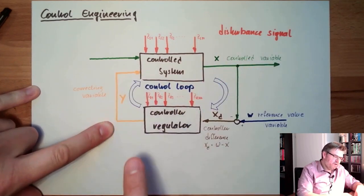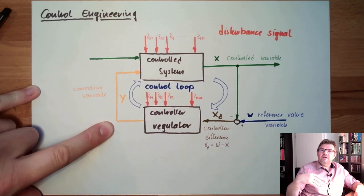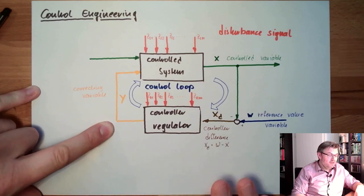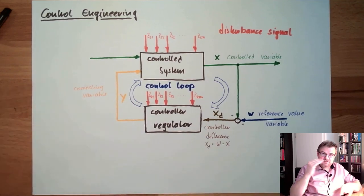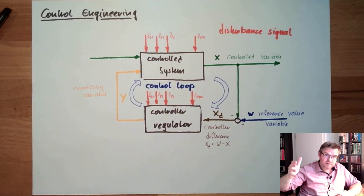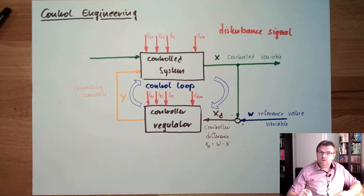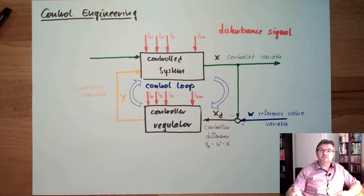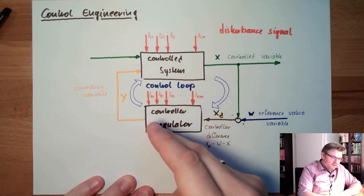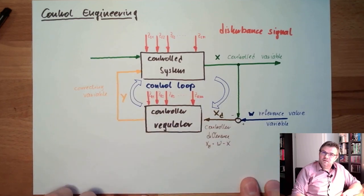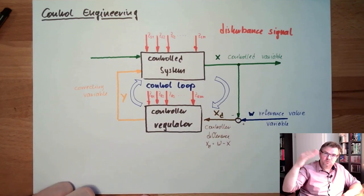However, here the correcting variable does not need to be continuous. If it can have any value between a minimum and a maximum, then it's a continuous controller. If it can only have discrete values — the most simple example is turn on or turn off — if the temperature is too low, turn on the heater; if too high, turn off the heater. Then it's only two discrete values, and this is a switching controller because it switches between discrete values.